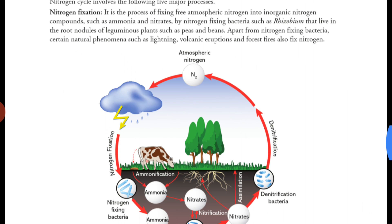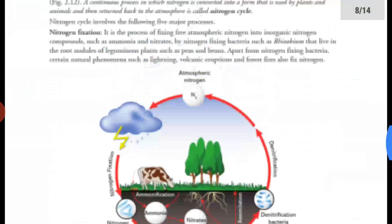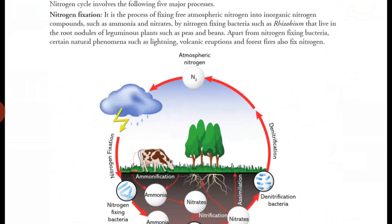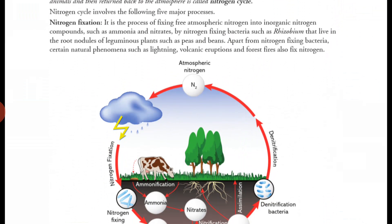The first step is nitrogen fixation. It is the process of fixing free atmospheric nitrogen into inorganic nitrogen compounds such as ammonia and nitrates, by nitrogen-fixing bacteria such as Rhizobium that live in the root nodules of leguminous plants such as pea and beans. The free nitrogen present in the environment — 78% of the atmosphere — is converted by Rhizobium into ammonia and nitrates.